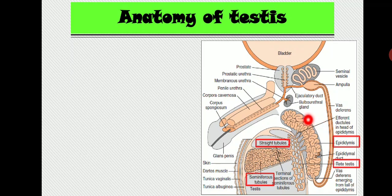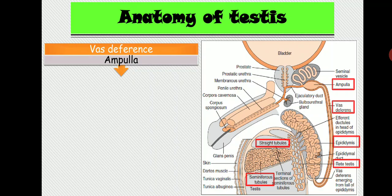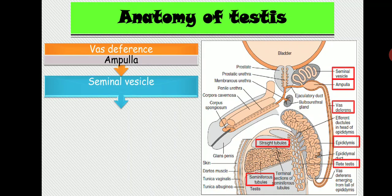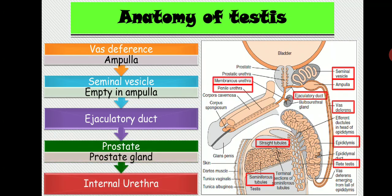The epididymis has a head, body, and tail. After the tail there is the vas deferens. Before the vas deferens ends it has a dilated portion known as the ampulla. After that, the seminal vesicle secretes its secretion into the ejaculatory duct — it empties inside the ampulla. Then there is the ejaculatory duct, which enters the prostate gland. The prostate secretes its secretion inside the ejaculatory duct. Finally there is the membranous urethra and penile urethra.